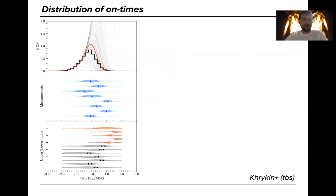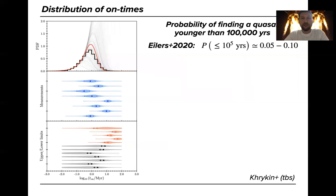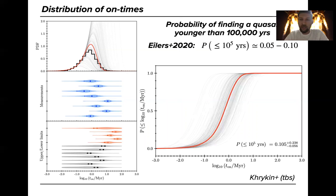So Christina Eilers for example in their recent paper found this probability to be 5 to 10 percent from observing I think 150 quasars. So we can translate this PDF to the CDF and estimate the same number and we get 10 percent plus minus a few percent.